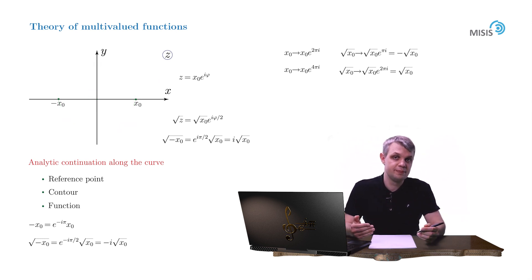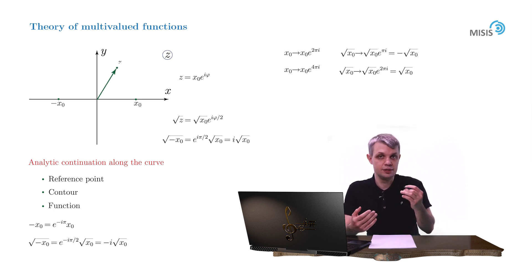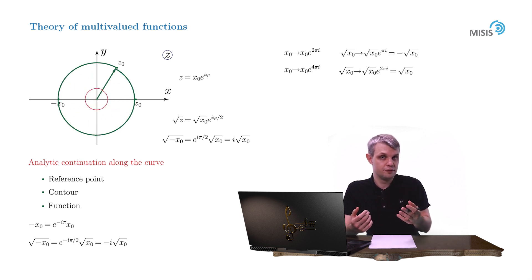Obviously, this property doesn't depend on the reference point or initial point. We may choose any point in the complex plane, say z₀. Make the first rotation and the square root of z₀ flips its sign. And after the second rotation, it returns to its original value.